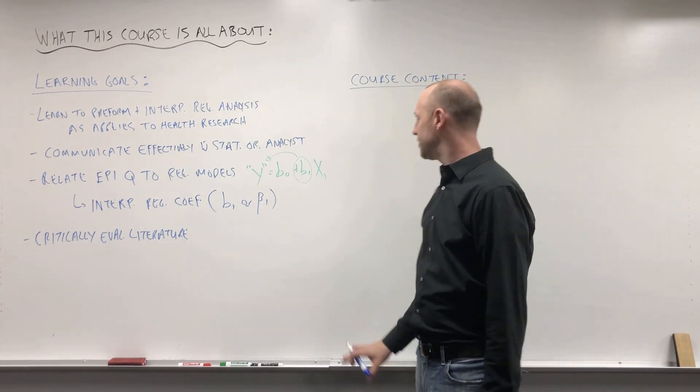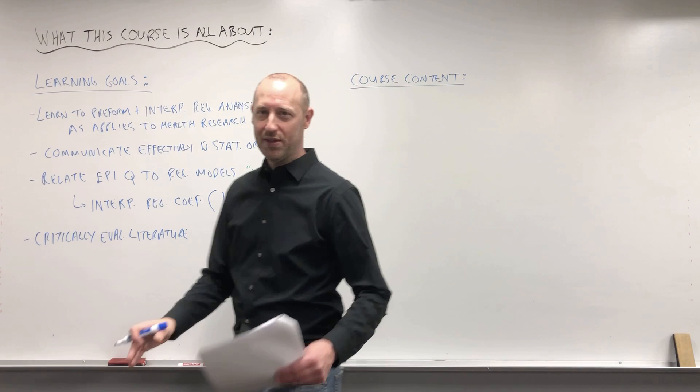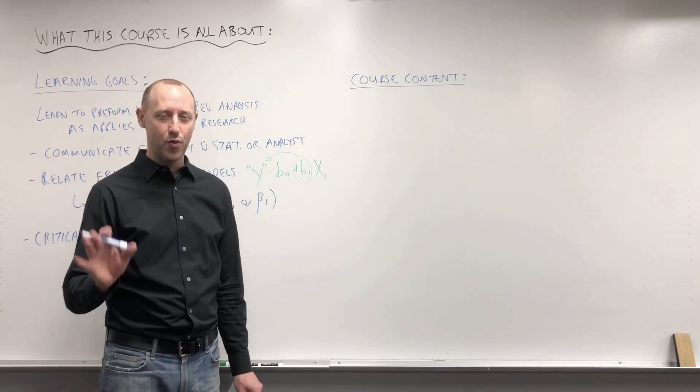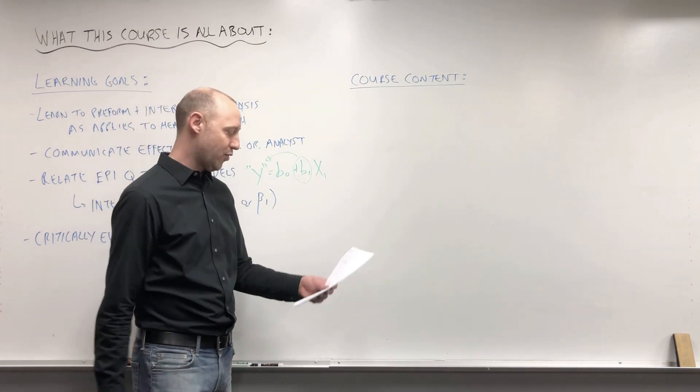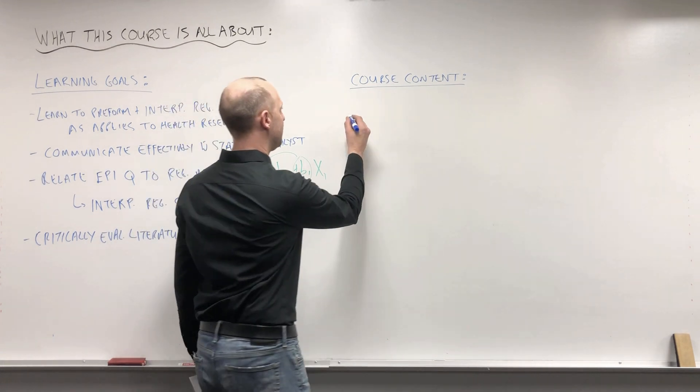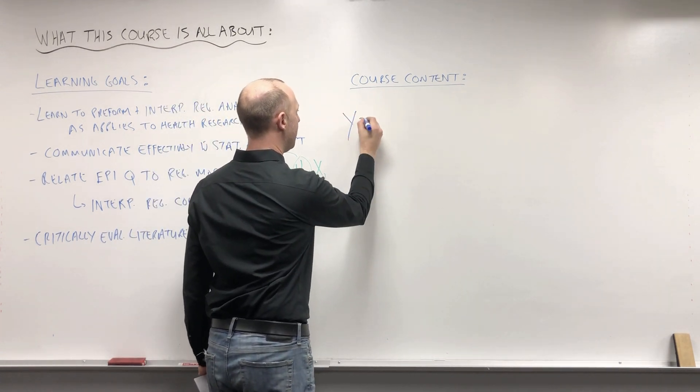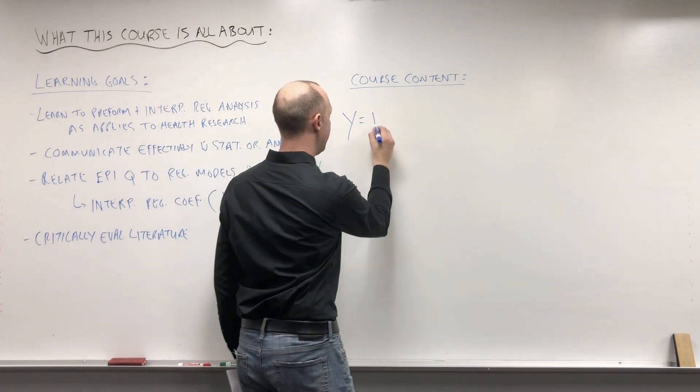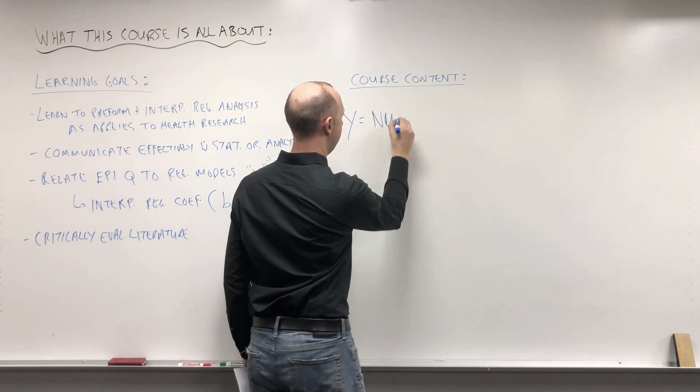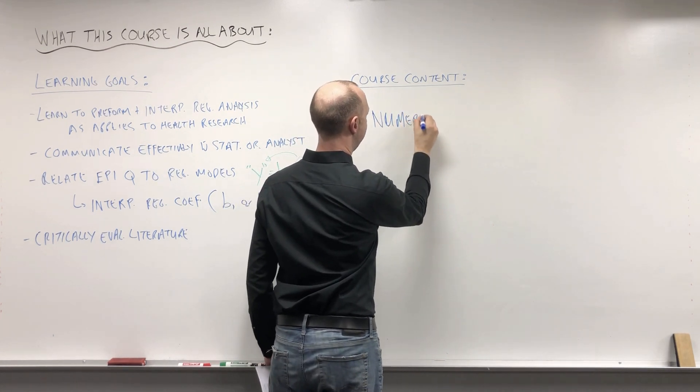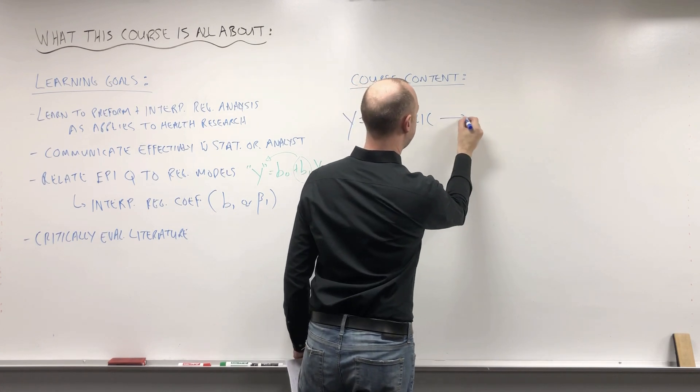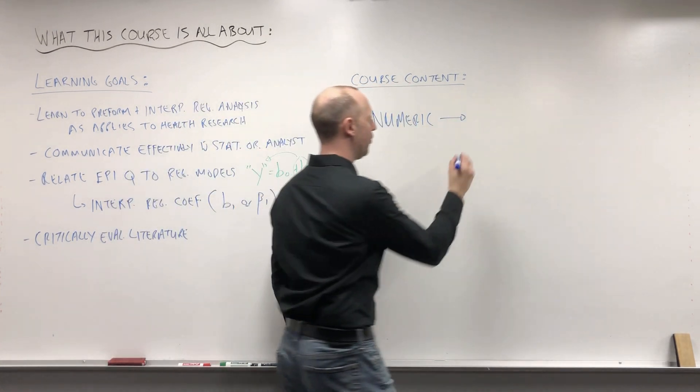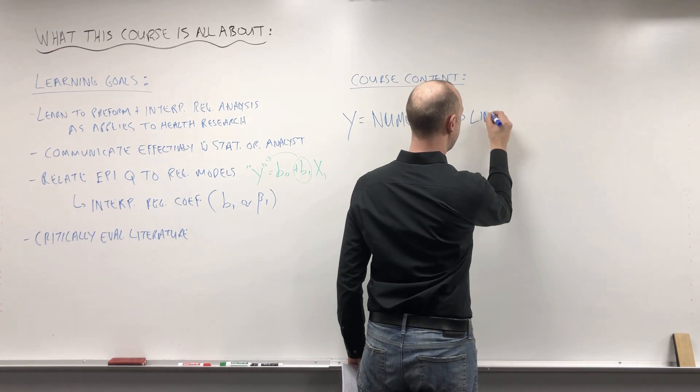So these are the goals for the course. The course content - the big picture - we're going to look at four types of regression models. The first is where our outcome variable is numeric, and for analyzing numeric outcomes we're going to look at linear regression.